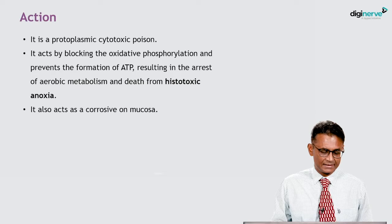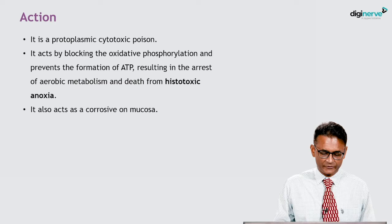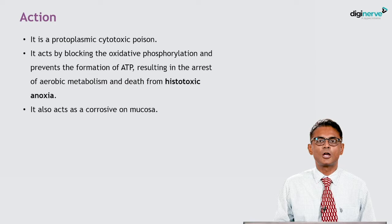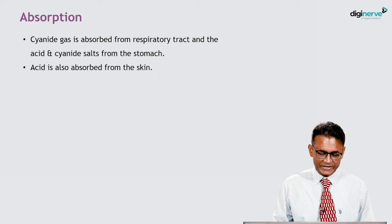Cyanide is a protoplasmic cytotoxic poison. It acts by blocking oxidative phosphorylation and prevents the formation of ATP, resulting in the arrest of aerobic metabolism and death from histotoxic anoxia. It also acts as a corrosive on the mucosa. Remember for MCQs: cyanide causes histotoxic anoxia.